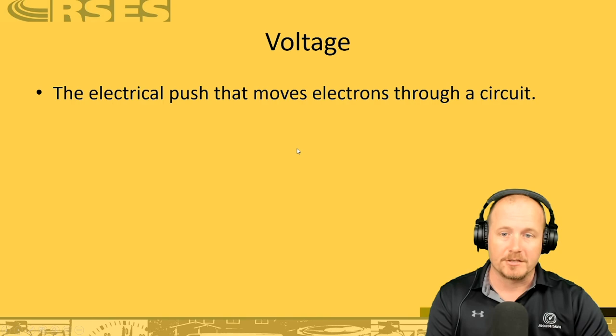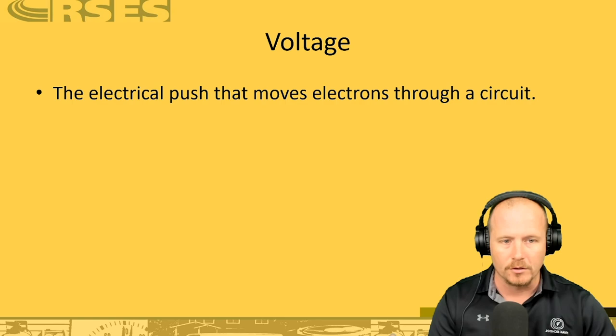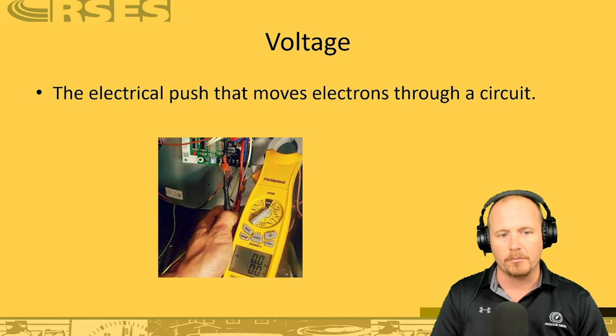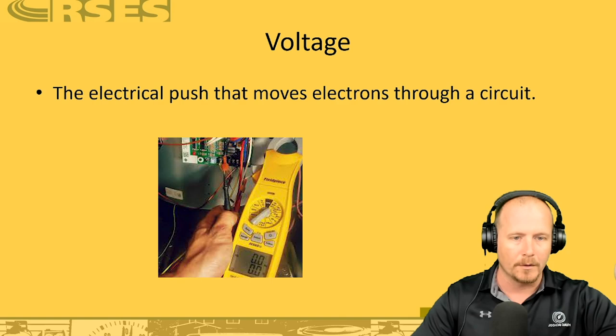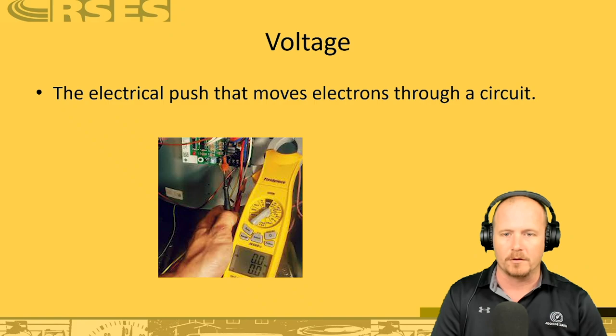Now let's talk a little more about voltage. Voltage is the electrical push that moves electrons through the circuit. It is a difference in charges — a potential difference — but it's also an electromotive force, sometimes designated as EMF. That's the difference in force or potential difference between two different points. That's why an electrical meter has two probes: one probe in one point, another probe in another point, to see what the potential difference in voltage and force between those two points is. You never take just one probe to measure voltage — it's always between two different points.